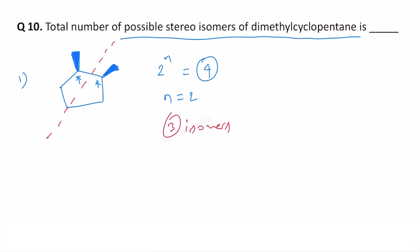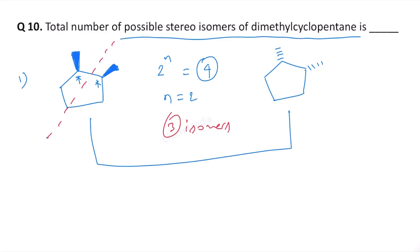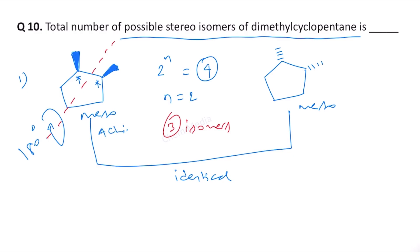One of them is a meso compound. Whether you put both methyl groups up or both methyl groups down, they are one and the same — they are identical. Because if you rotate the molecule 180 degrees along the plane of symmetry, whether clockwise or counterclockwise, you can reach the other one. So both are identical; both are meso. Therefore this must be counted as one isomer.